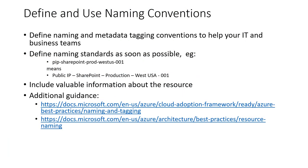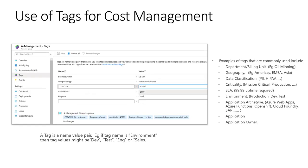Before you move from architecture to implementation, it is important to define your corporate naming conventions. Well-defined naming and metadata tagging conventions help IT staff quickly find and manage resources. Well-defined names and tags can also help align cloud usage costs with business teams. Naming standards should be defined very early in the lifecycle to avoid non-compliant names right from the start. Let's look at how tags can be used for cost management.